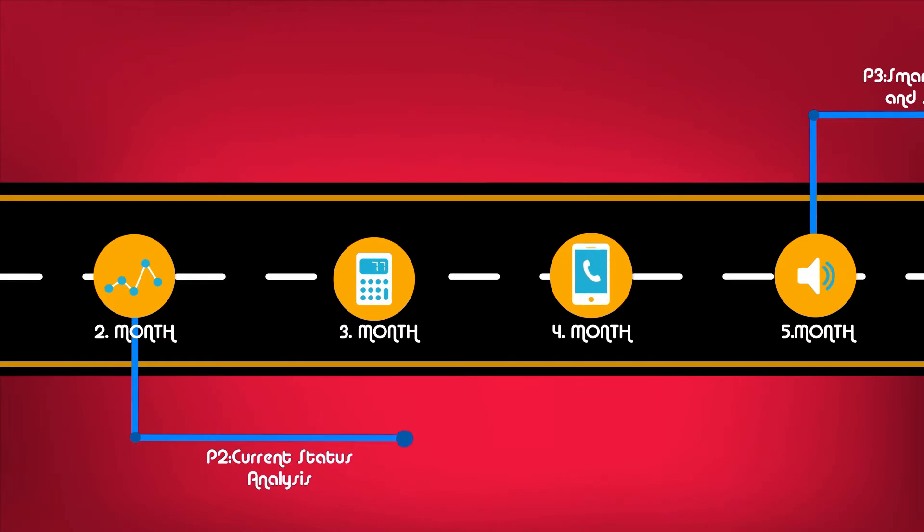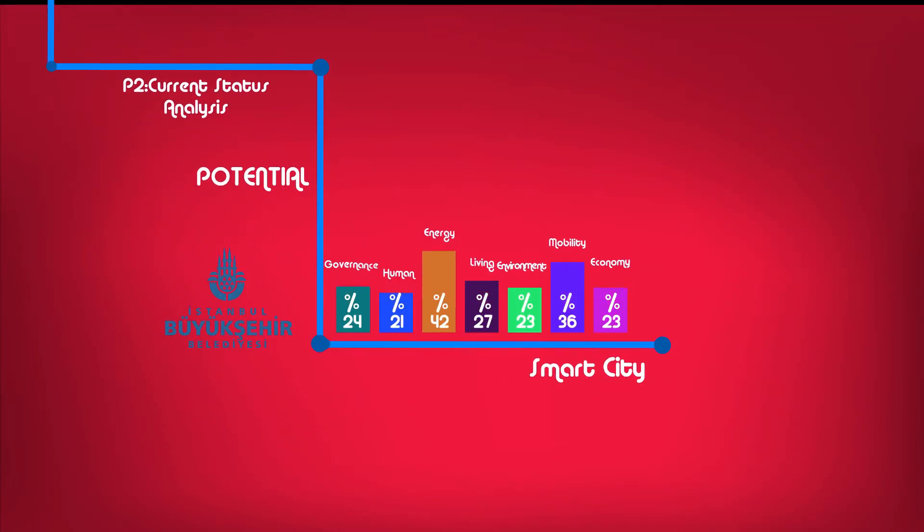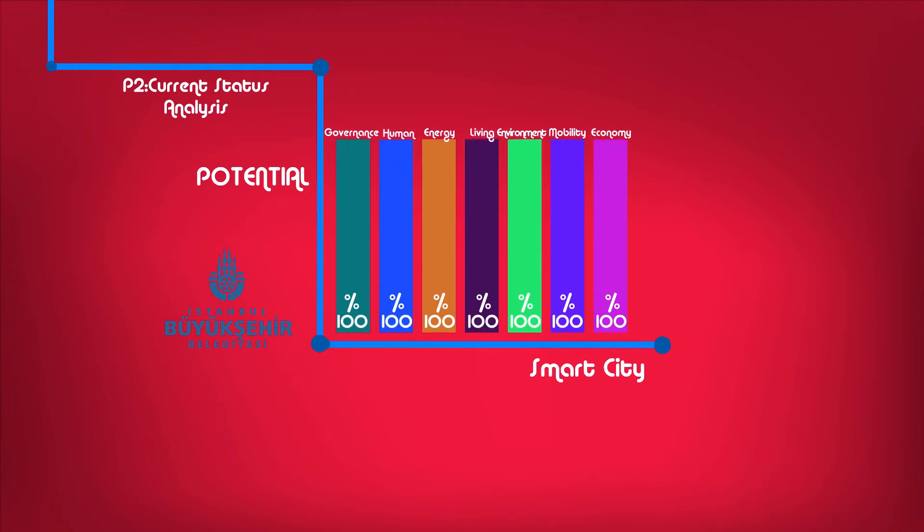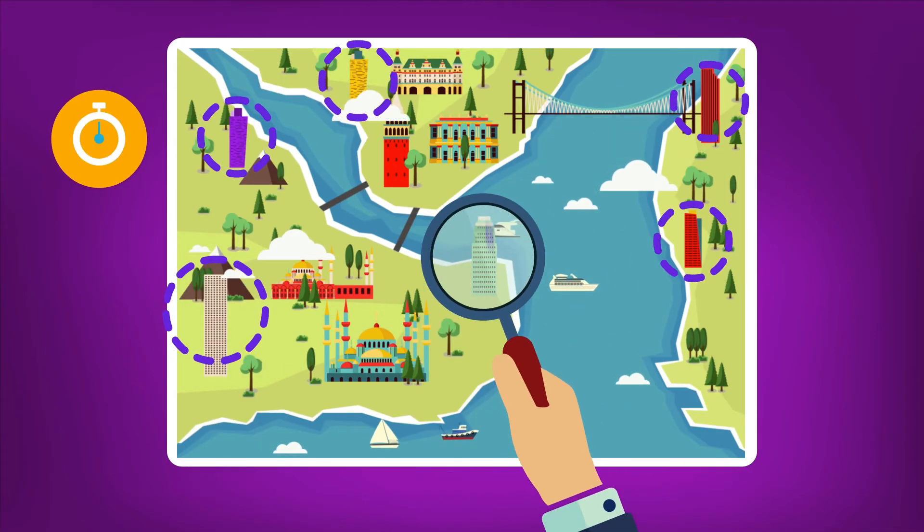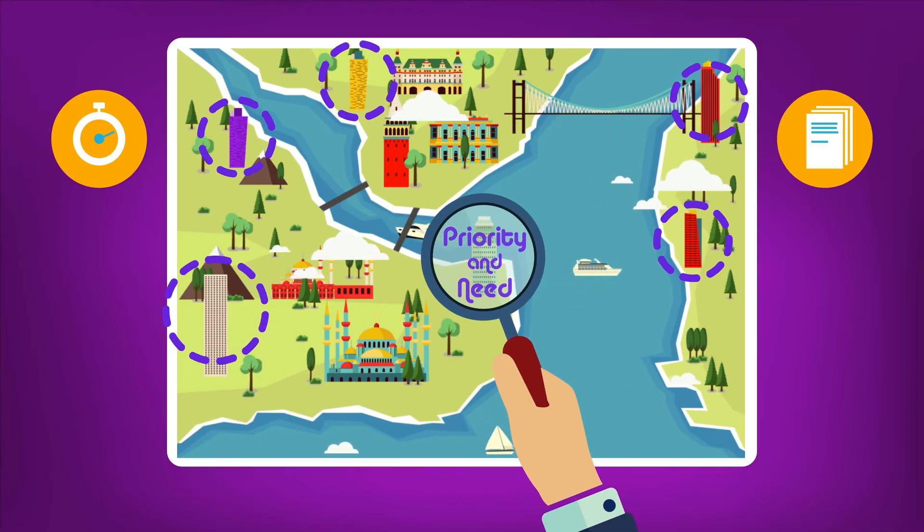Current Status Analysis: For a period of five months, identification of stakeholders in smart city focus areas, determination of stakeholders' priorities and respective needs from smart city. Over 900 hours meeting with stakeholders in seven focus areas for this purpose, 12,000 page interview report.